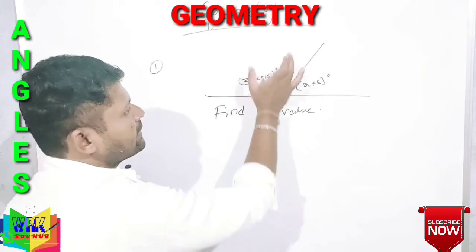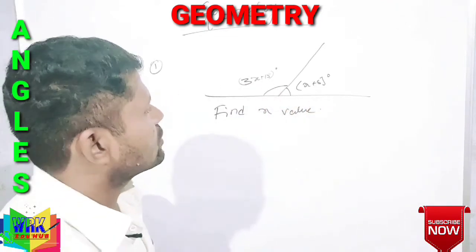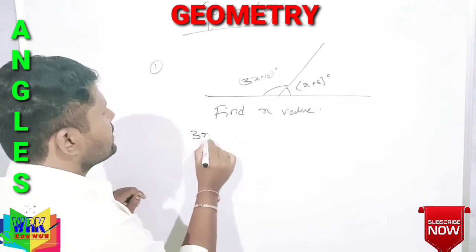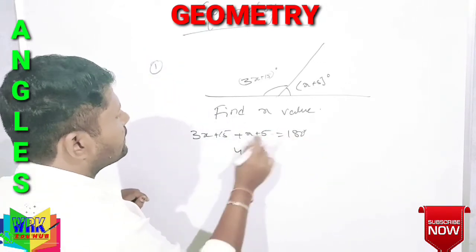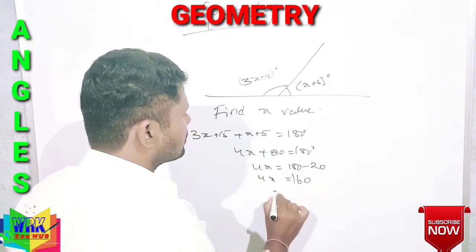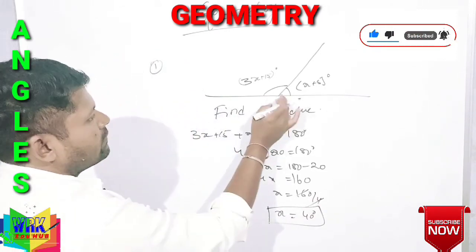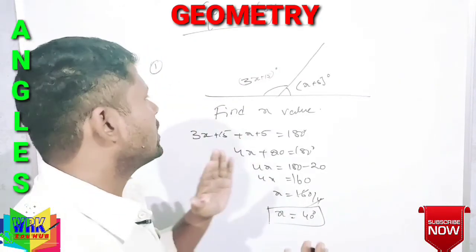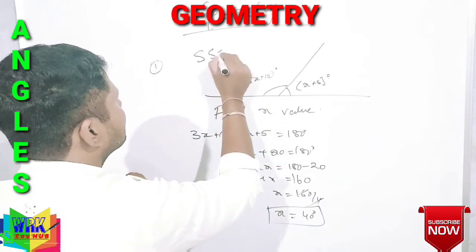Now see the problem: angles given are 3x plus 15 degrees and x plus 5 degrees. Find the x value. It forms a straight angle, so the sum of these two angles equals 180 degrees. So: 3x + 15 + x + 5 = 180. That gives 4x + 20 = 180, so 4x = 160. This is a previous SSC CGL question.